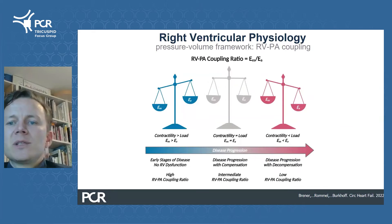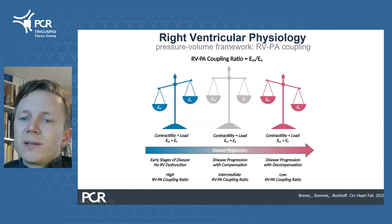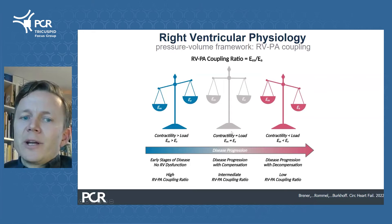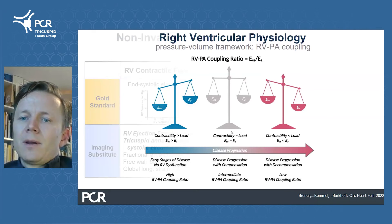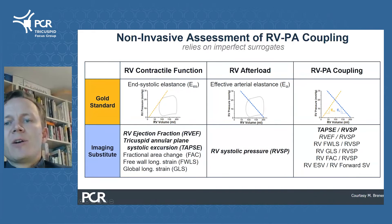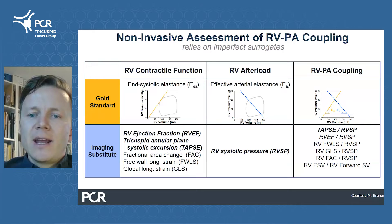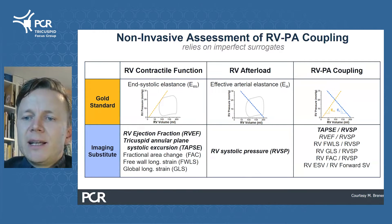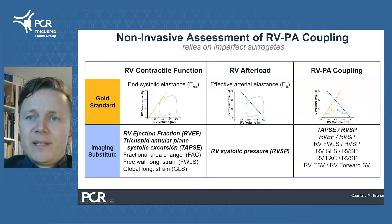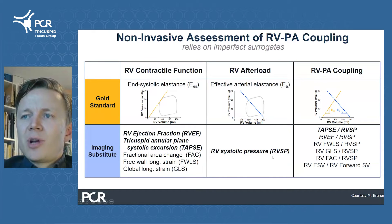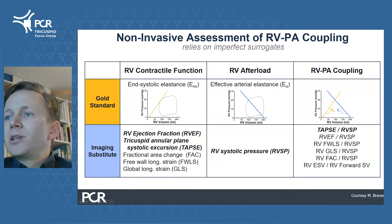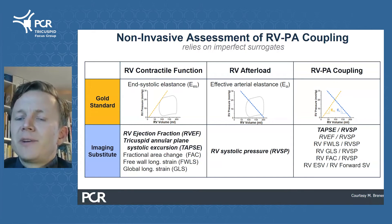As such, we can use this concept to describe disease progression, but also to evaluate RV compensation relative to abnormal RV loading. Since acquisition of invasive pressure-volume loops is not feasible on a large scale in clinical practice, we usually rely on non-invasive surrogates. The most commonly used is the ratio of TAPSE over PA systolic pressure, or right ventricular systolic pressure, which was initially evaluated for left heart failure patients.